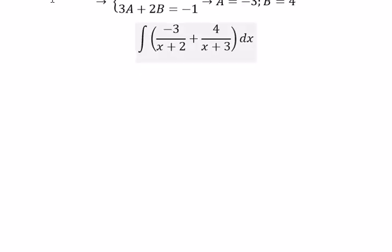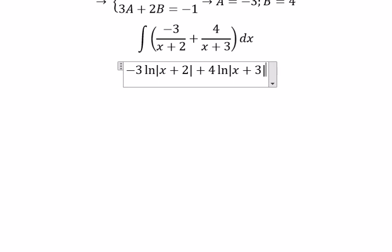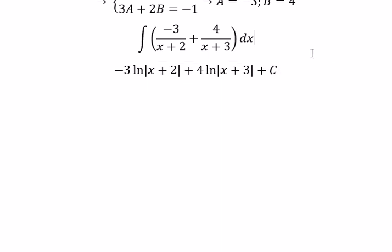Now we can get the final answer. The integral of negative 3 over x plus 2 plus 4 over x plus 3. This gives negative 3 multiplied with the natural log of the absolute value of x plus 2, and similar for the next term. This is the final answer. Thank you for watching.